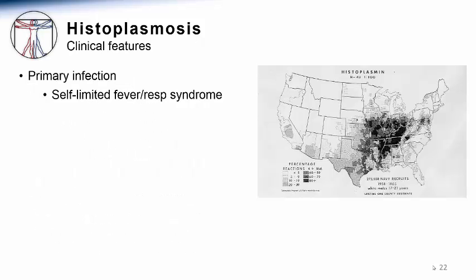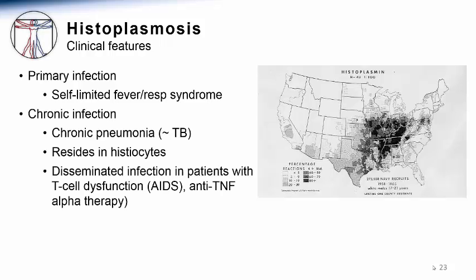Similar to Coccidioides primary infection, people in the midwest exposed to Histoplasma species often have a self-limited respiratory infection characterized by cough and perhaps some fever. The chronic infection, however, is distinct in that the lung is the primary site of chronicity and reactivation. Clinically, it very similarly mimics chronic tuberculosis. Patients living in this region often have calcified granulomas demonstrating old healed pulmonary histoplasmosis, and reactivation infections in this organ can occur.